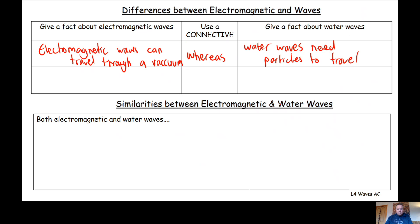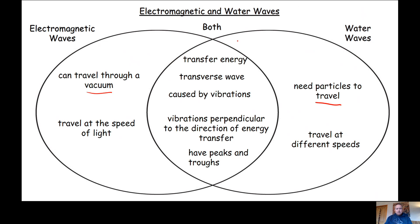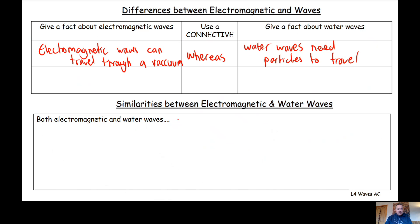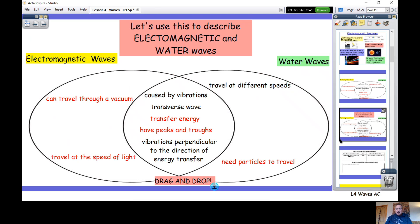For the similarities section, look at what electromagnetic waves and water waves have in common. For example, both electromagnetic waves and water waves transfer energy. So you can write: 'Both electromagnetic waves and water waves transfer energy' — that's how to fill in the similarities section.